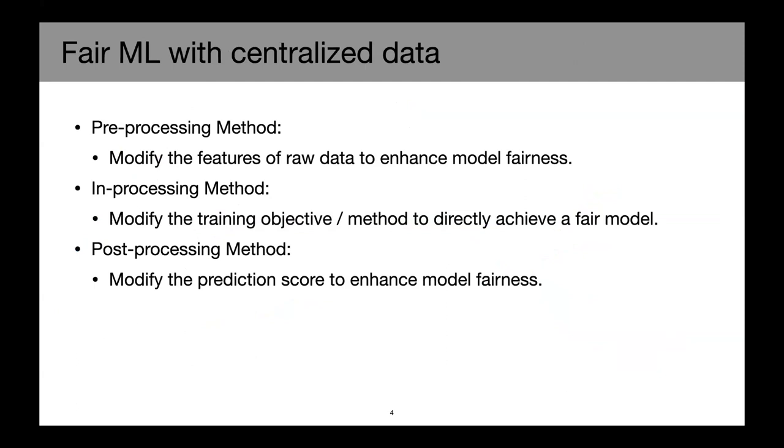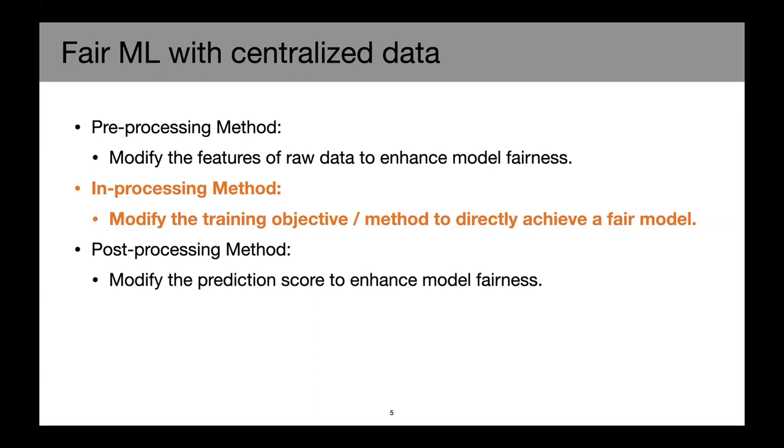Given that we have a centralized data set, a lot of prior works have studied this problem. In general, there are three different classes of methods. There are pre-processing methods that aim to rectify or modify the features of the raw data to enhance the model fairness. There are in-processing methods that try to directly modify the training objective or the method to achieve a fair model. And there are also post-processing methods that, given a fixed model, take the model output and modify the prediction score to enhance model fairness. In this work, we're focusing on the in-processing method, which tries to modify the training objective directly.